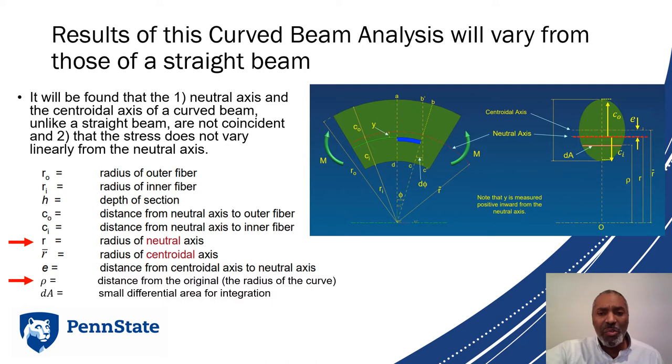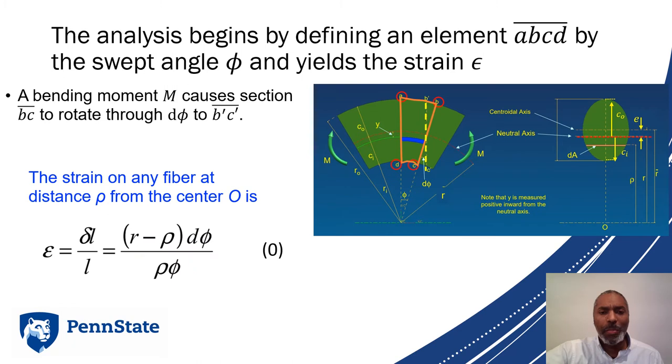Here's some definitions for our figure. The two important ones are r, which is the radius of our neutral axis, and rho, that's the distance from the origin, the radius of our curve. We're also going to come back to this little angle phi and this small angle d phi, which will help define a little arc segment.